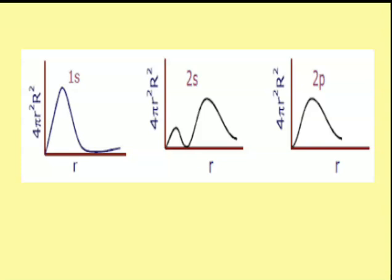For 2s, there are two peaks — one smaller peak and one larger peak — meaning in 2s there is one node. A node is the point where the probability of finding the electron is zero. The first maxima at the shorter distance comes out at 0.8 A₀, where A₀ is the Bohr's first orbit radius equal to 0.529 angstrom. The second maxima comes at 5 A₀, which means approximately 270 picometers.